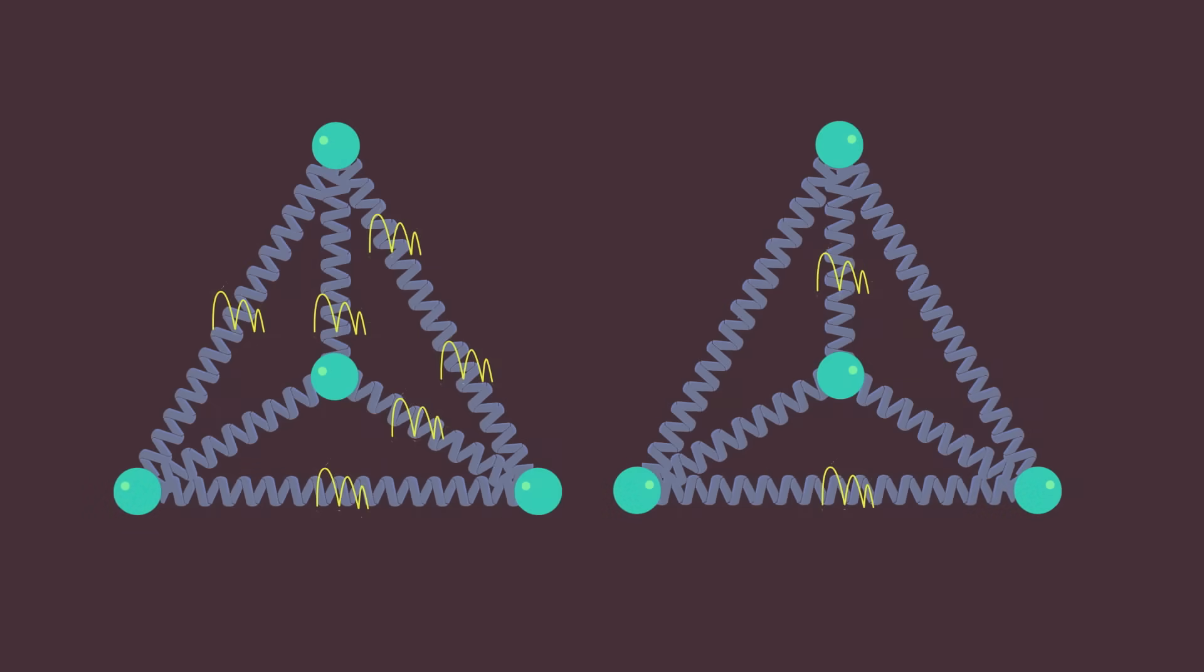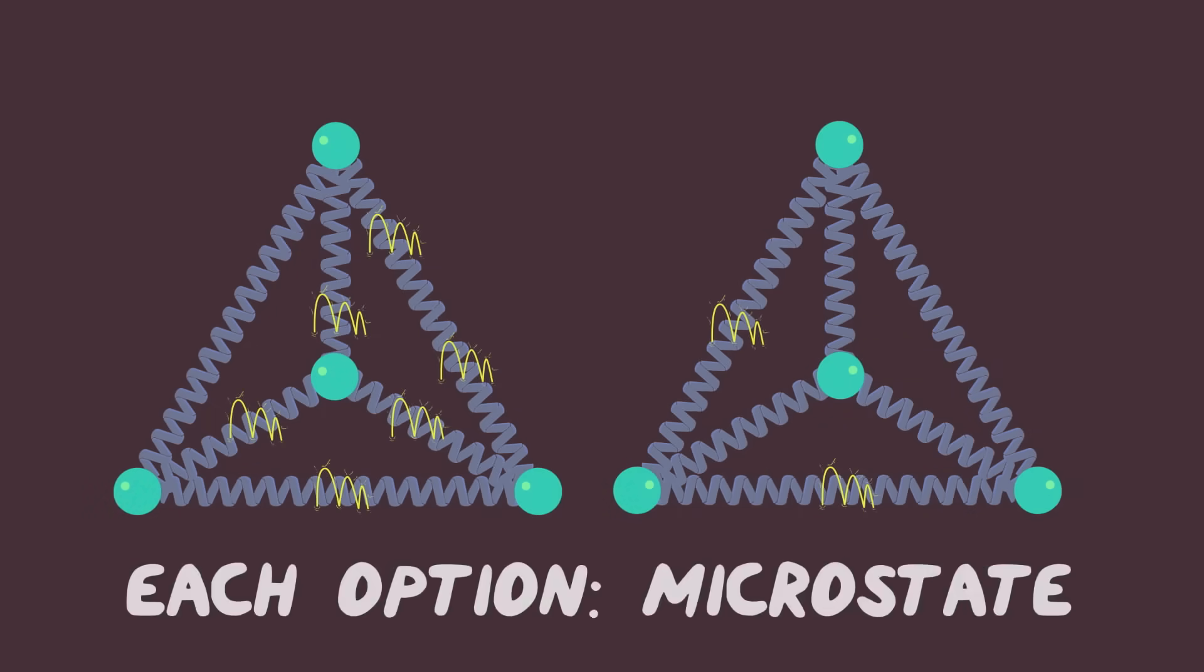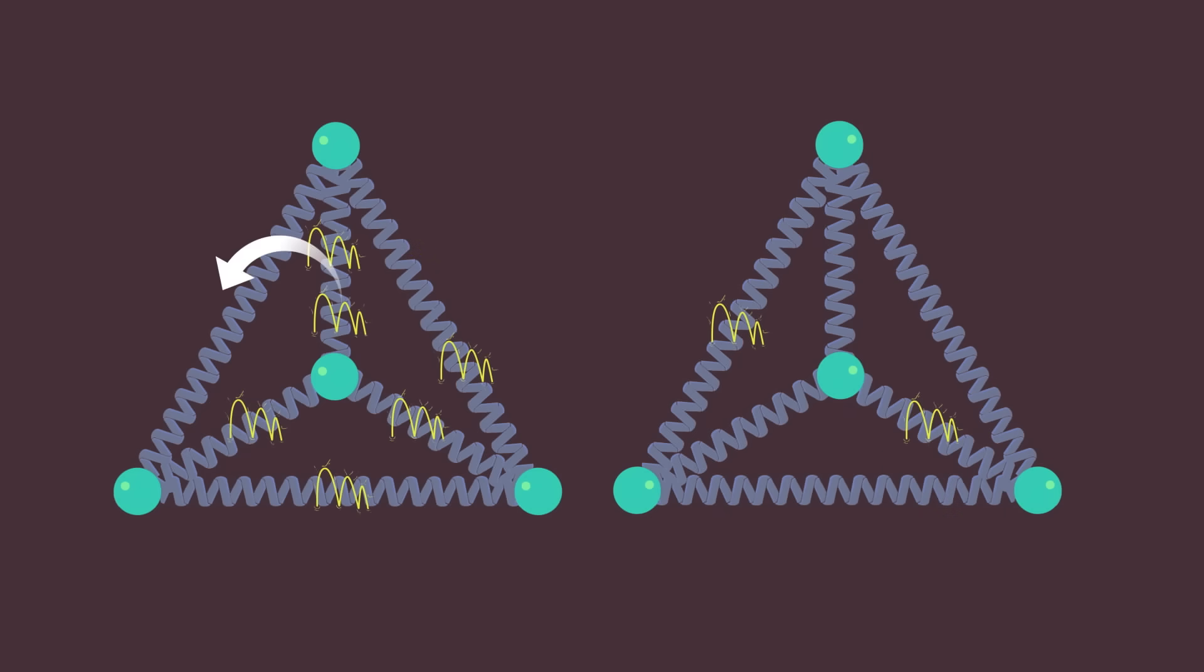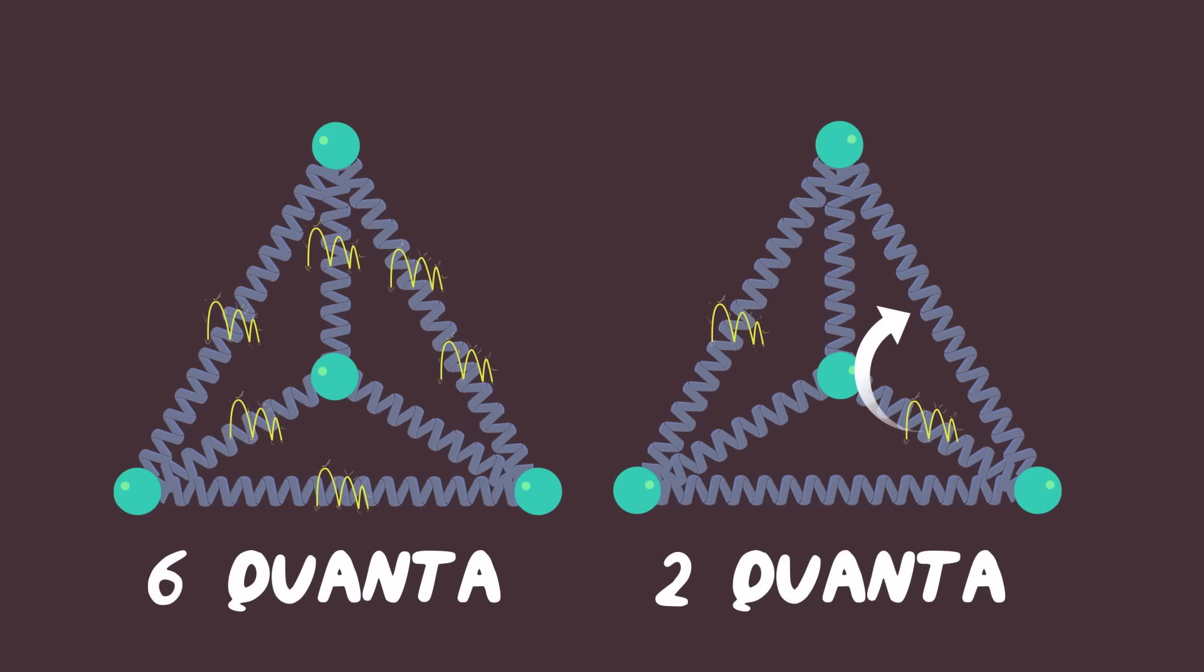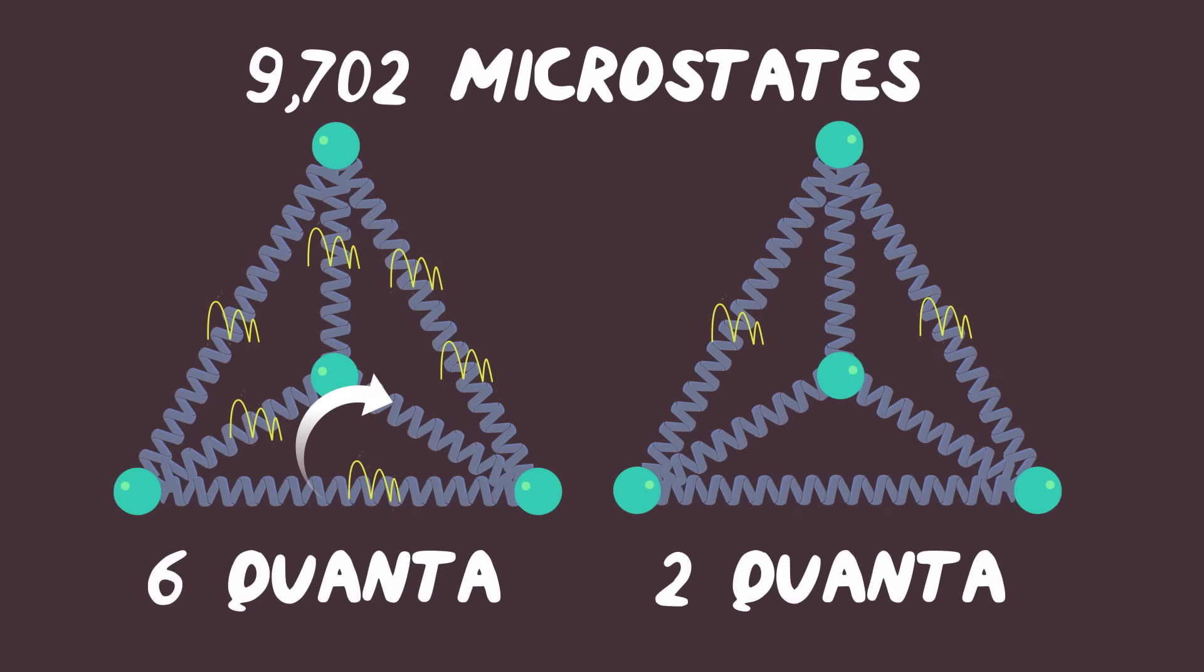It turns out that there are numerous ways that the energy can be distributed in the two solids, and still have the same total energy in each. Each of these options is called a microstate. For six quanta of energy in solid A, and two in solid B, there are 9,702 microstates.